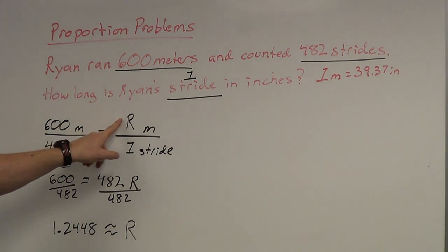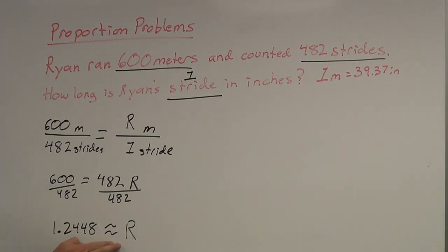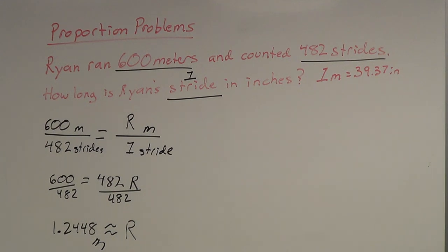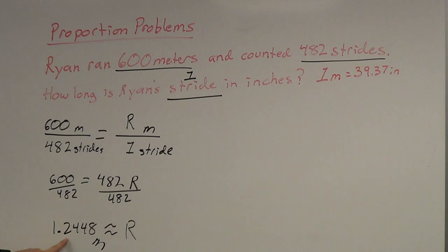R was the length of Ryan's stride, so R is about 1.2448 meters. When he's running, his stride is about 1.2448 meters — we'll call it about 1.2 meters. Now, a meter in our standard system is about 39 inches — a little bit more than 39 inches, as we see here. So it's a little bit more than 3 feet, meaning his stride is probably about 40 to 42 inches if I was to guess. But we want to find out exactly what that is.